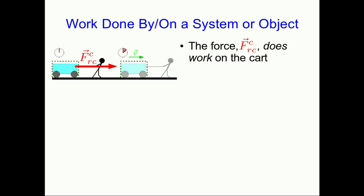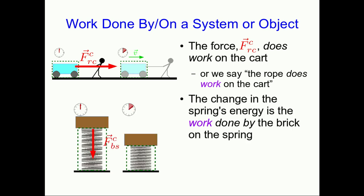I want to talk about use of language for a moment because it's useful. In the case of the rope exerting a force on the cart and causing the cart's energy to change, we say that the force exerted by the rope on the cart does work on the cart, or alternatively that the rope does work on the cart. Similarly, in the case of the brick compressing the spring, the work done is the work done by the brick on the spring.